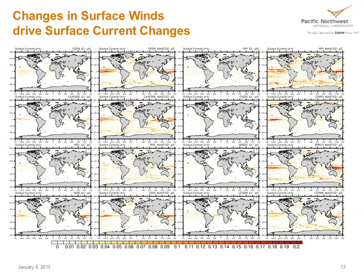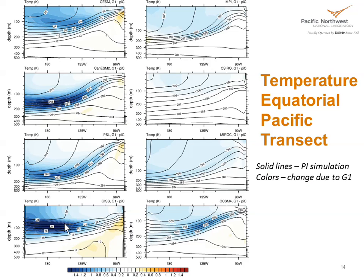There are also changes in surface winds, and these changes in surface winds end up driving a surface current change as well. What you're seeing here is a superposition of arrows, indicating the surface current change, with the intensity of the color indicating the intensity of the current speed change. You can see significant changes in tropical wind stresses in the four-times CO2 runs, and much reduced signatures of wind changes in the geoengineered simulation. But there are frequent signatures in the Pacific in many of the models, even in the geoengineered simulations.